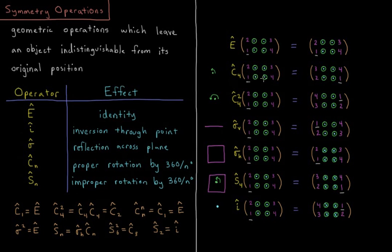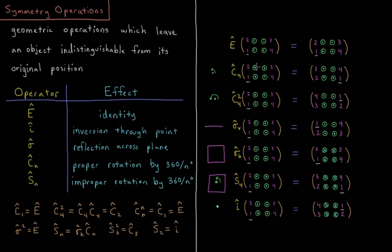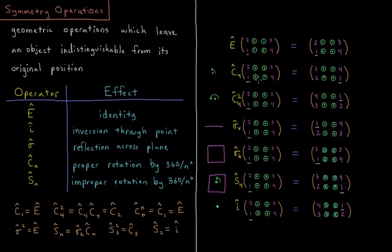I'm rotating counter-clockwise, the usual definition relative to the direction where the axis is coming towards you. So one goes to four, four goes to three, three goes to two, two goes to one, and they're all still pointing out towards us.